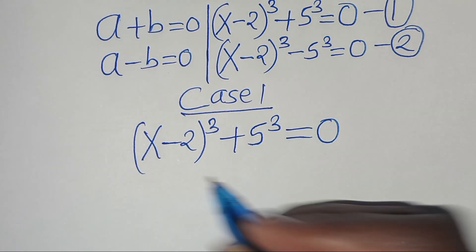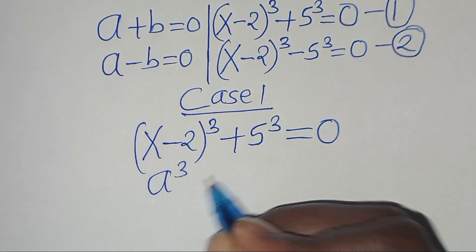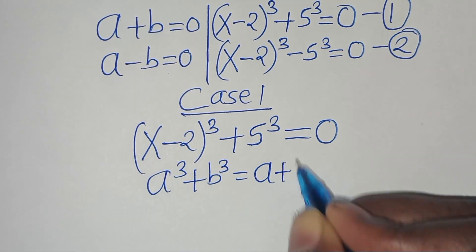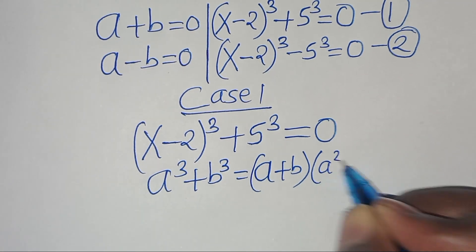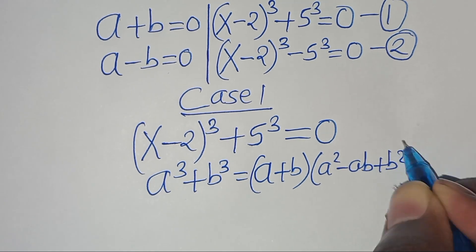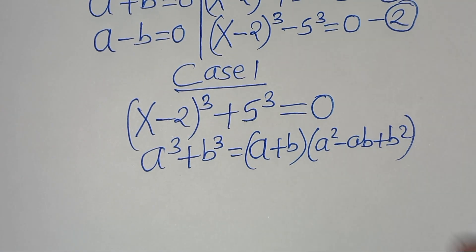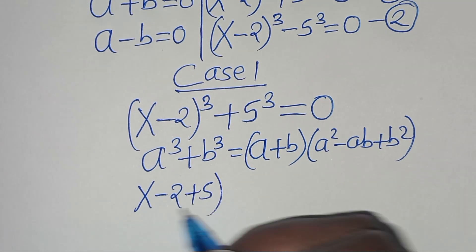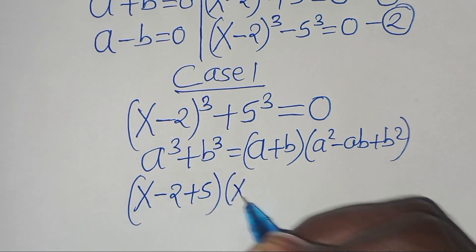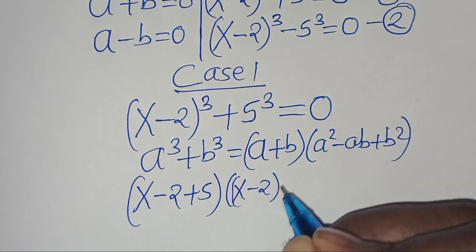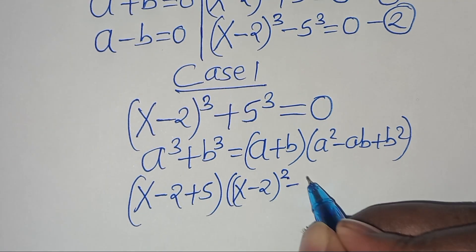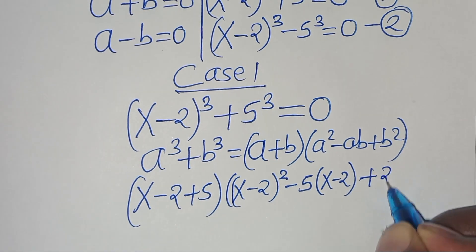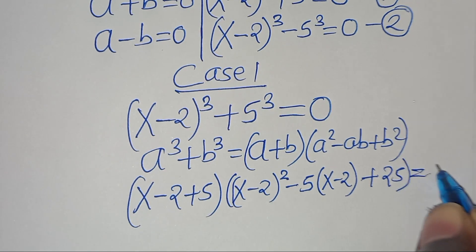This equation is in the form a^3 plus b^3, which we can express as (a plus b)(a squared minus a times b plus b squared). Applying this identity, we have (x minus 2 plus 5) multiplied by [(x minus 2)^2 minus 5(x minus 2) plus 5 squared, which is 25], equal to 0.